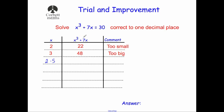We've got x cubed plus seven times x, which means we're going to cube our number and add seven times the number. So for 2.5, we're going to do 2.5 cubed plus seven times 2.5. Type that into your scientific calculator — the cubed button may be above the squared button, so you might need to press shift. 2.5 cubed plus seven times 2.5 gives us 33.125. We want 30, so that's too large.